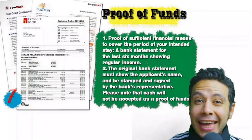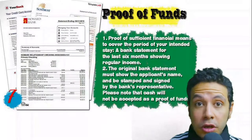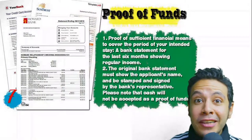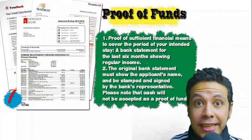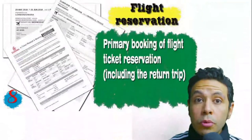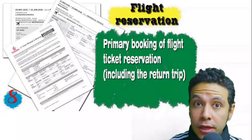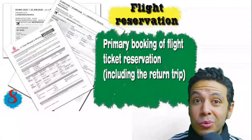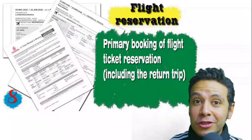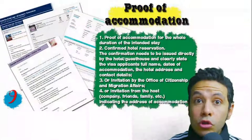You will also need to provide proof of sufficient funds: a bank statement showing your balance for at least six months. The original bank statement must show your name and be signed and stamped by bank representatives. Remember, cash will not be accepted as proof of funds. You should also provide a flight reservation — an initial booking is usually acceptable, but in some cases a confirmed booking is required — and it must include a return ticket.